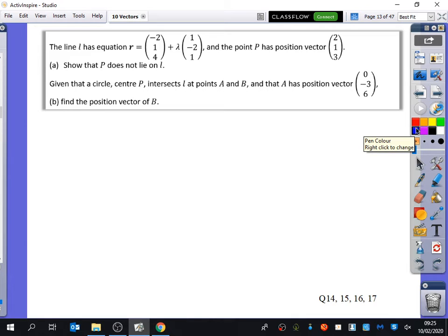So we've got the line L has equation R equals (-2, 1, 4) plus lambda (1, -2, 1). And the point P has position vector (2, 1, 3). Show that P does not lie on L. First of all, can we just remind ourselves, what do these two things mean here? The first one is the position on the line, and the second one is the direction the line's going in.